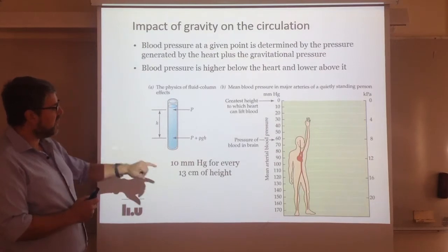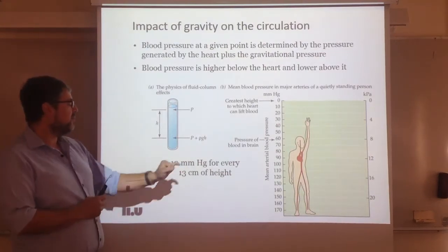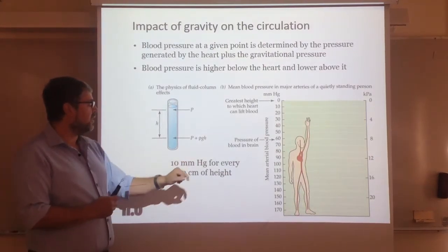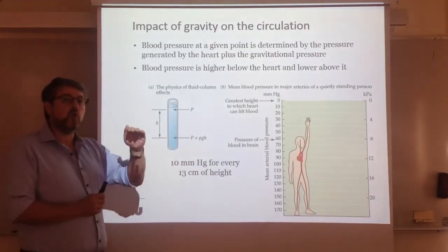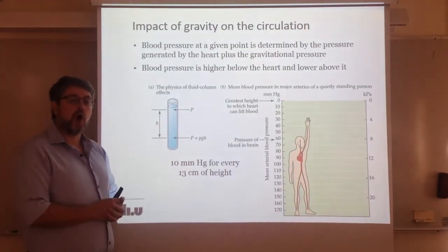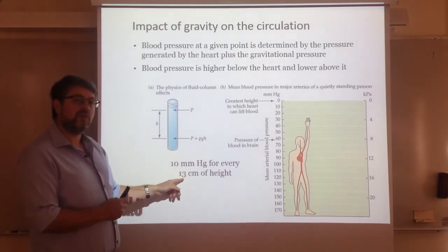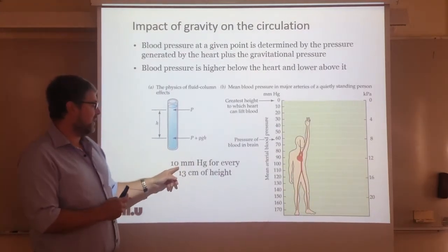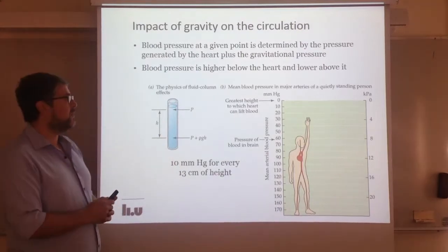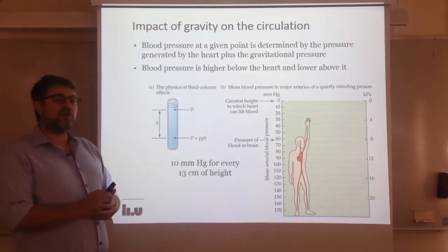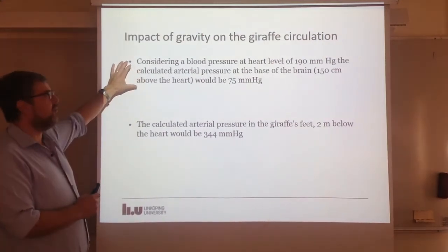This effect of gravity basically accounts for 10 millimeters of mercury for every 13 centimeters of height. That means that if you go 13 centimeters below the heart, blood pressure will increase by 10 millimeters, and the other way going up. And of course this poses important challenges that you can calculate yourself.